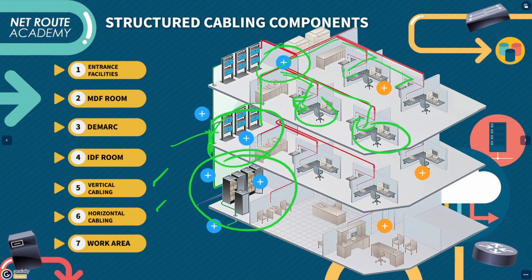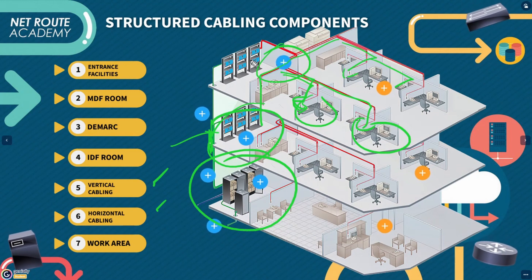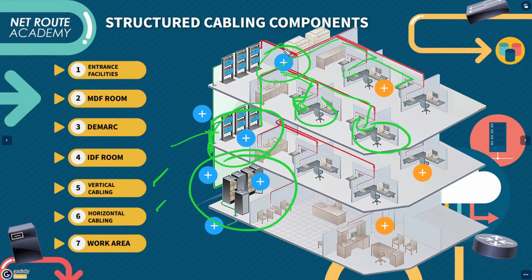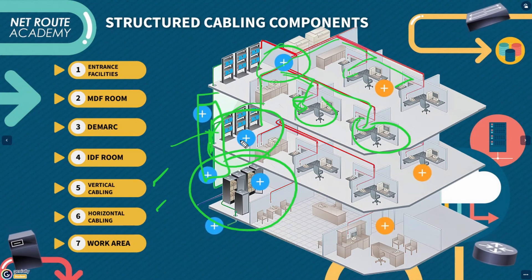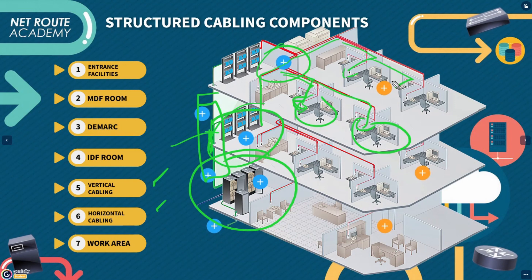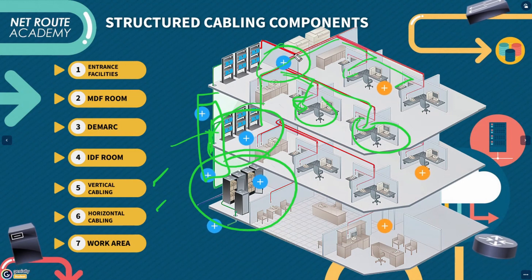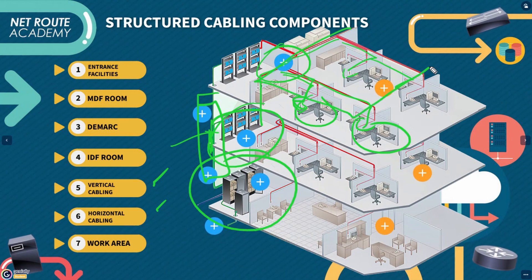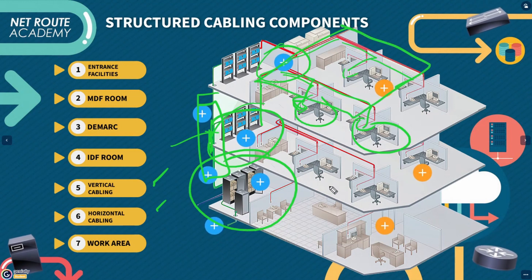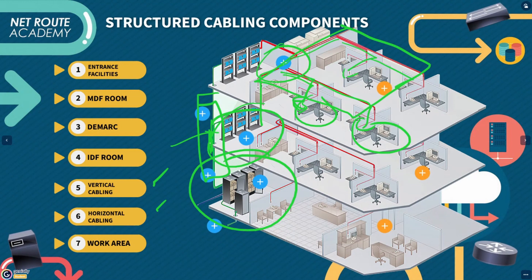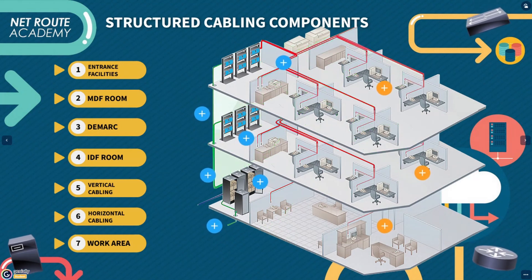You can definitely see the difference between the two. Vertical cables provide interconnection between telecommunication rooms, while horizontal cabling runs nearest to the workstation. Lastly is the work area — this is where the end user is seated.